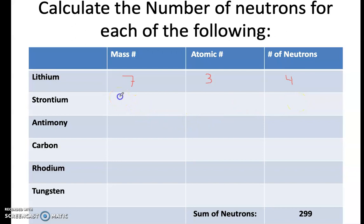Strontium's mass number is 88. Its atomic number is 38. Subtract the two, and you get 50 neutrons. Antimony is 122. Atomic number is 51. You subtract these two, you get 71.